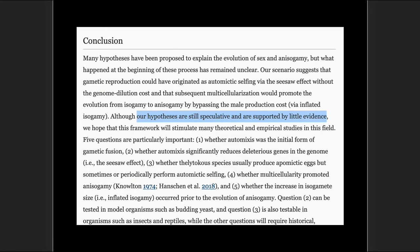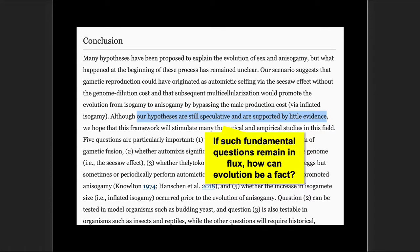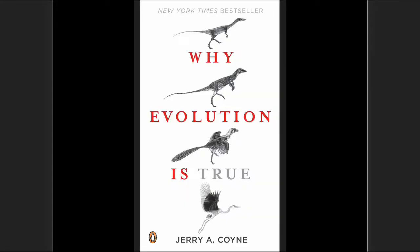And in their own conclusion the authors write: 'Our hypotheses are still speculative and are supported by little evidence.' So even in their conclusion, they have to admit this isn't solving the problem of how sexual reproduction evolved. If such fundamental questions remain in flux, are unanswered, are still a problem, how can evolution be a fact? I want you to think about that. How can evolution be a fact? Religion drives science, and it matters.